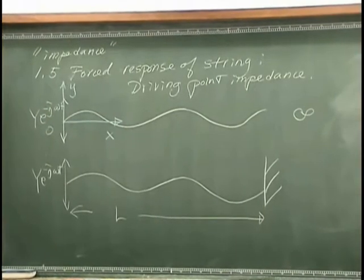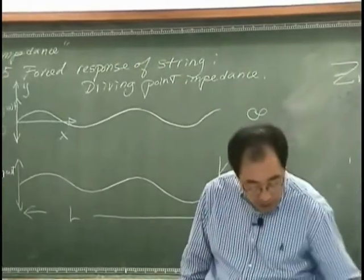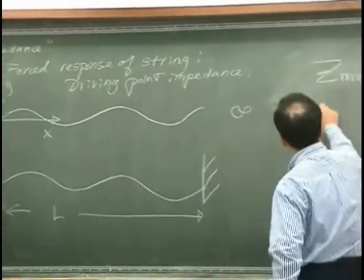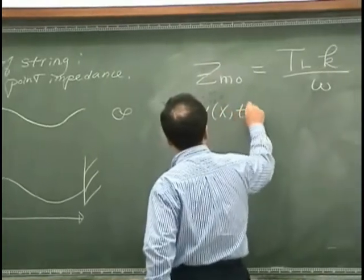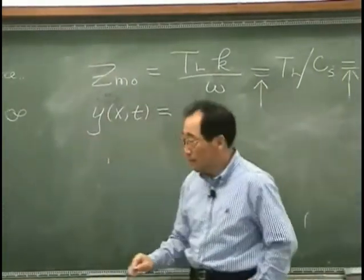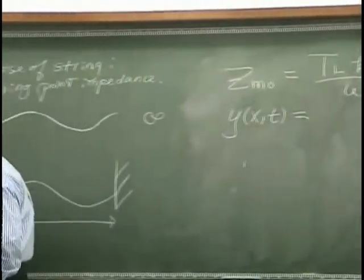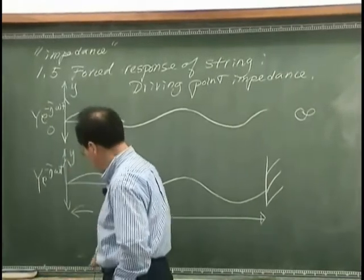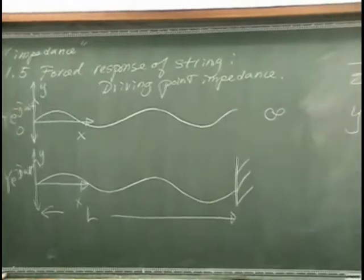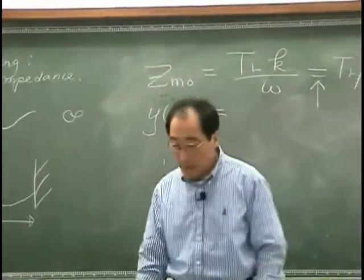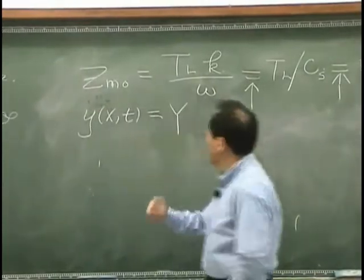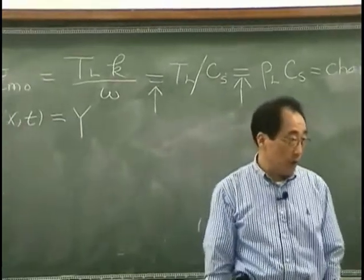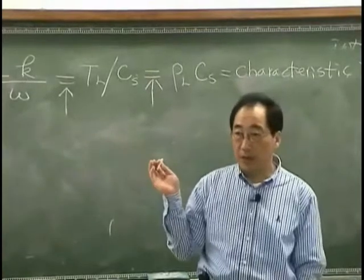For finite string that has length L, the wave we can expect is following. Possible wave would be function of x and time. Of course, in this case, we have same coordinate x and y.